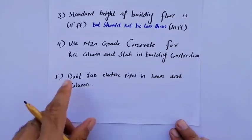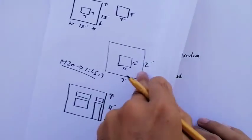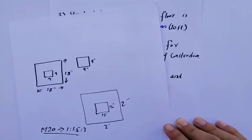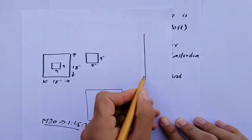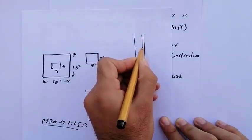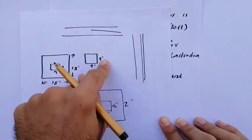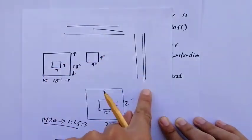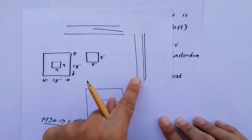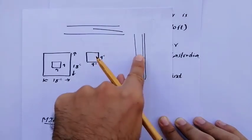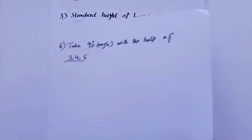Don't run electric pipes inside beams and columns. Sometimes on site, electrical pipes are placed inside columns and beams, but this should not be done. Running electrical pipes in columns or beams can weaken your concrete and reduce the strength of the column or beam.